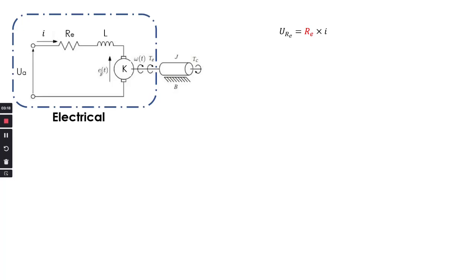The voltage drop across the resistor is R times i. The voltage drop across the inductor is L times di/dt, and the voltage drop across K, or the back EMF, is K times omega, where K is the DC motor constant.